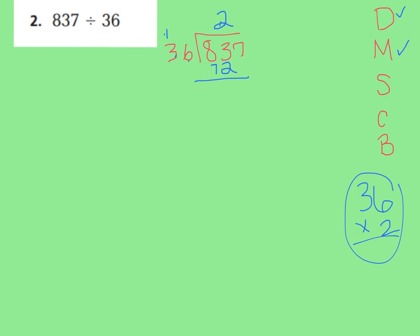Now let's go ahead and subtract. 83 tens minus 72 is: 3 tens minus 2 tens is 1 ten left, and 800 minus 700 is 100. So now I have 1 group of 100 and 1 group of 10 left — that's my subtract. Now let's check: I have 11 tens left over, and it's less than 36 — so it checks out. Now let's bring down my 7 ones, and now we have a total of 117 one-pieces.